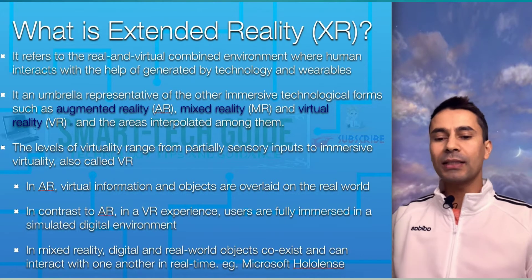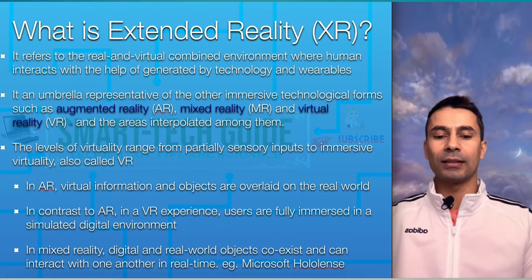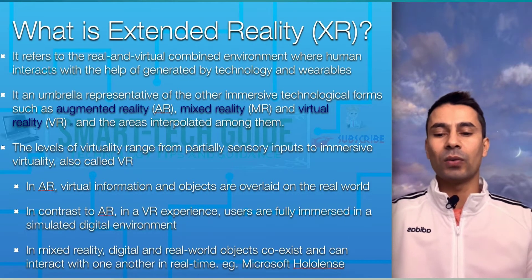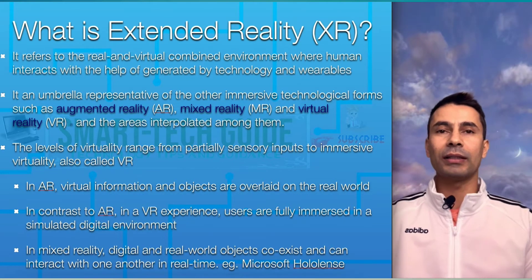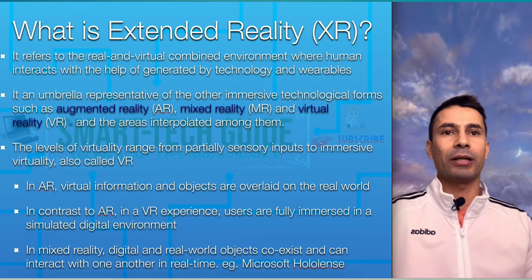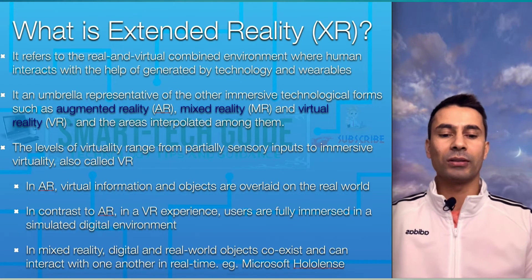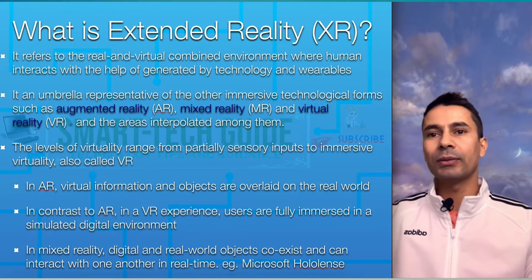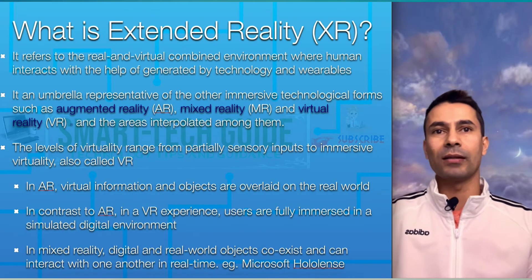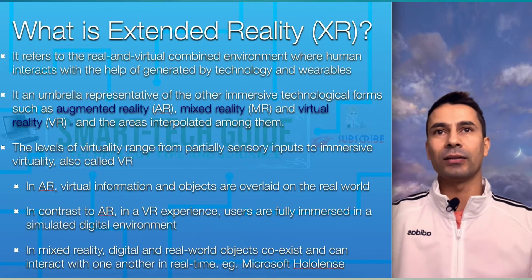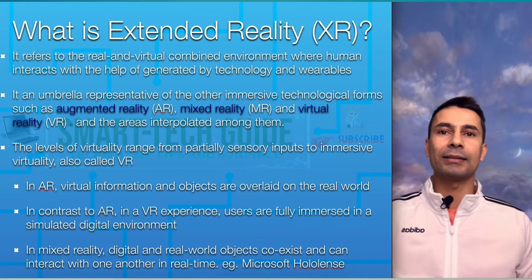Digital and real world objects can co-exist and interact with one another in real time — an example of this is the Microsoft HoloLens. You can interact with real world physical objects and virtual objects bi-directionally.